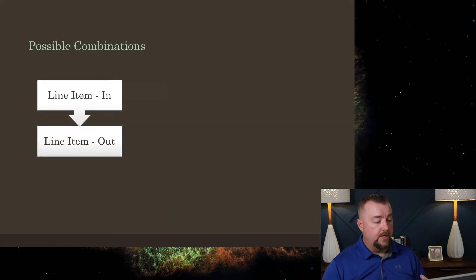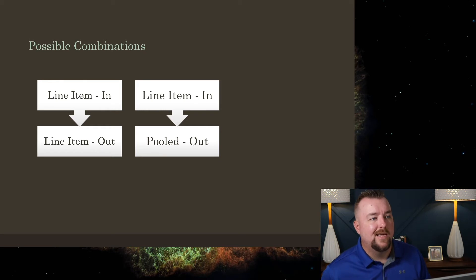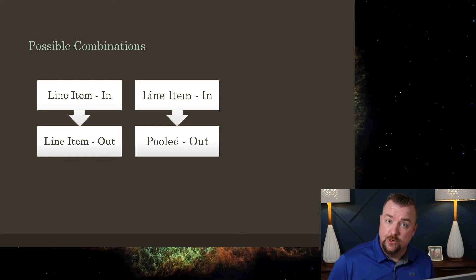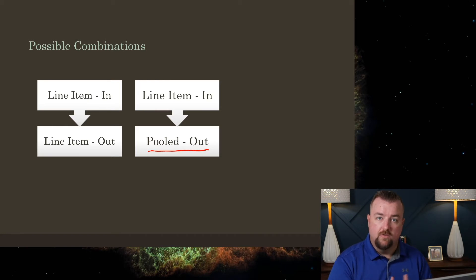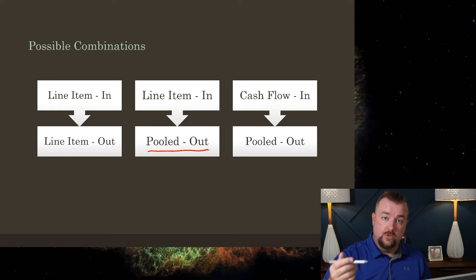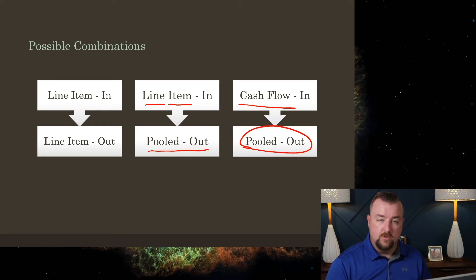So here are your possible combinations. You can put money in using the line item plan and take money out following a line item spending plan. Or you can put money in following a line item plan but spend it as a pooled plan. For example, if you only have $100,000 set aside for your roof but it actually costs $150,000, with a pooled spending plan you can pull that $50,000 from other line items and make it up later. The final combination is a cash flow in — where the amount you take in isn't dependent on each line item but rather on keeping the account above zero — and when you do a cash flow plan, you can only follow the pooled spending plan.